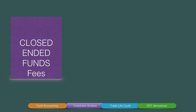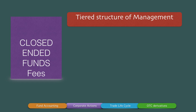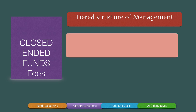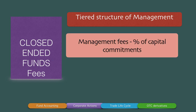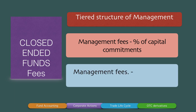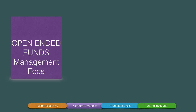A closed-ended fund is also different in terms of the fee structure. A closed-ended fund has a tiered structure of management fees. Since there is only capital commitment in a closed-ended fund, management fees have to be charged as a percentage of AUM. There are two tiers: management fees charged as a percentage of capital commitments, and management fees charged as a percentage of capital contributions. The limited partners pay management fees only as a percentage of capital contribution and a very minuscule percentage of capital commitment.